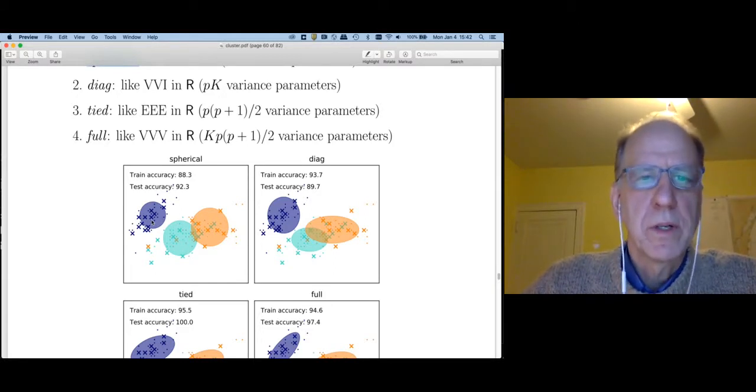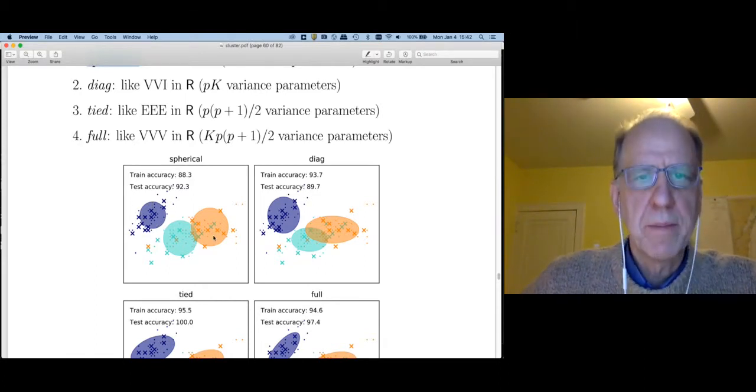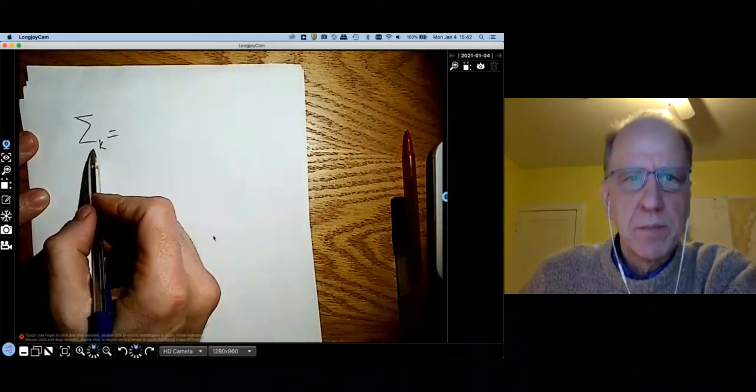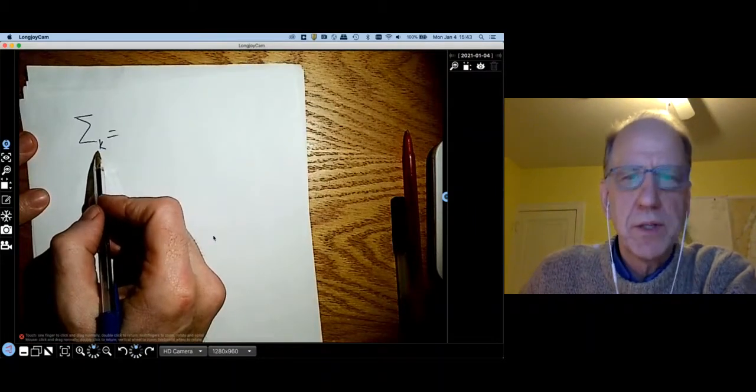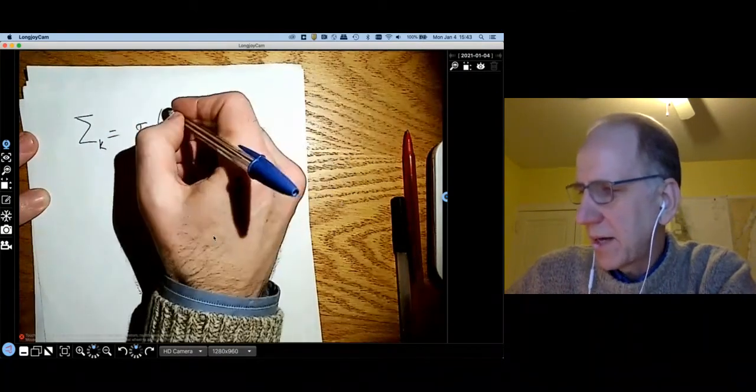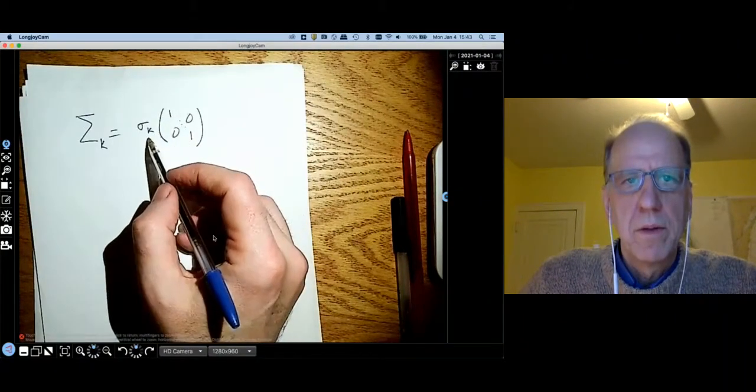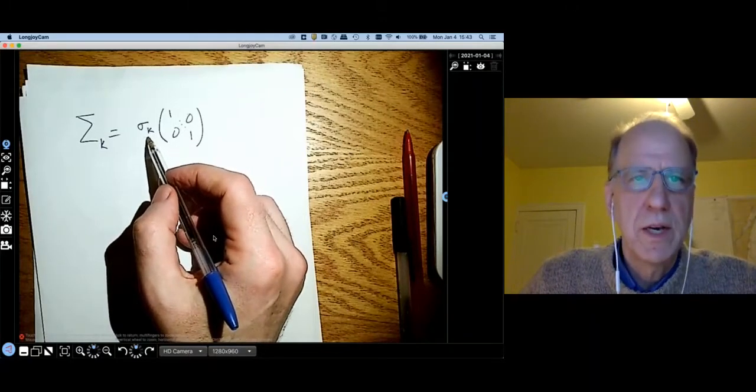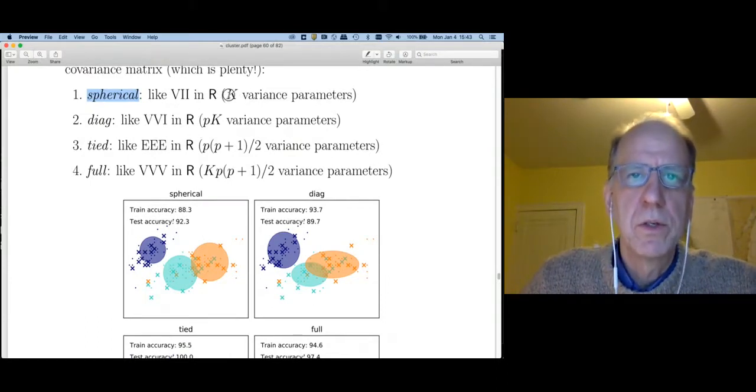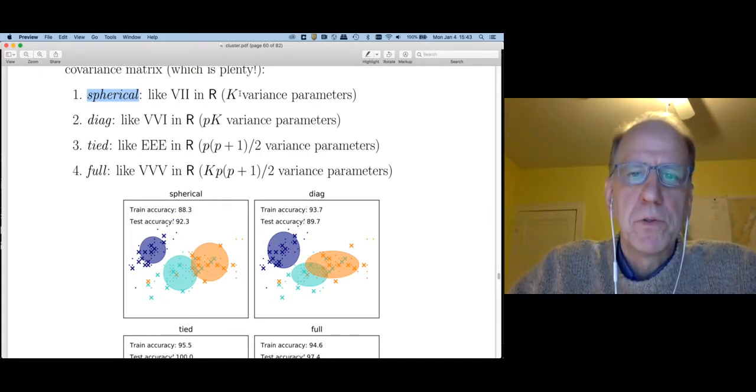The first is called spherical. This is a picture from the Python documentation, and I think this diagram shows what spherical means very clearly. What we see is round clusters of different sizes. So the way to think about this is sigma sub k is equal to, the covariance matrix of cluster k is going to be some little sigma sub k times the identity matrix. This is the recipe for generating a spherical cluster. This says we're going to allow different clusters to have different variances.